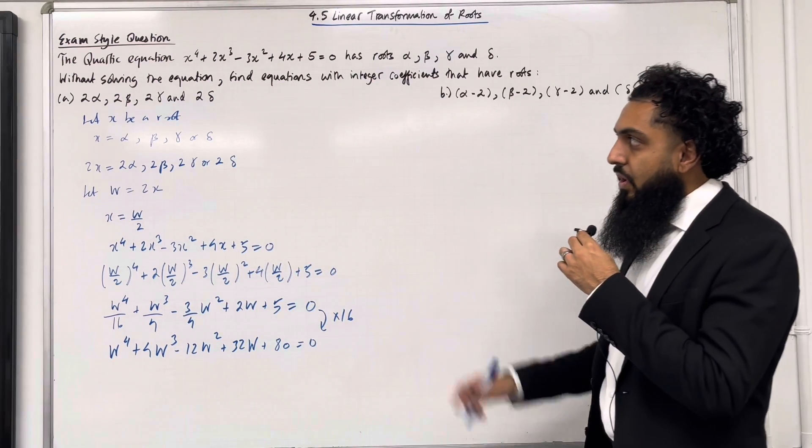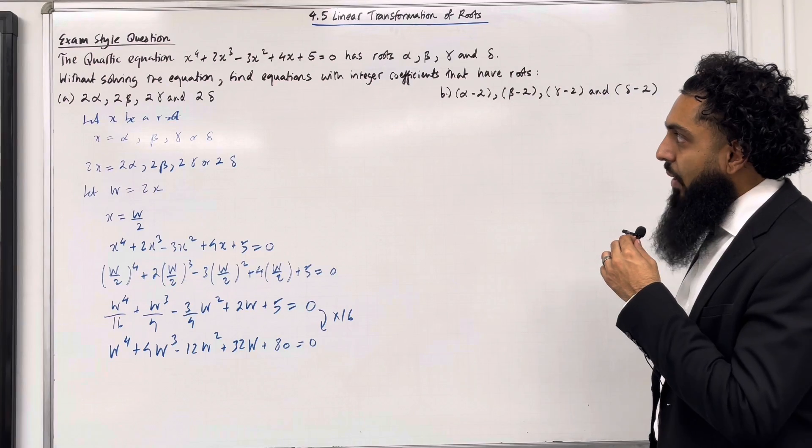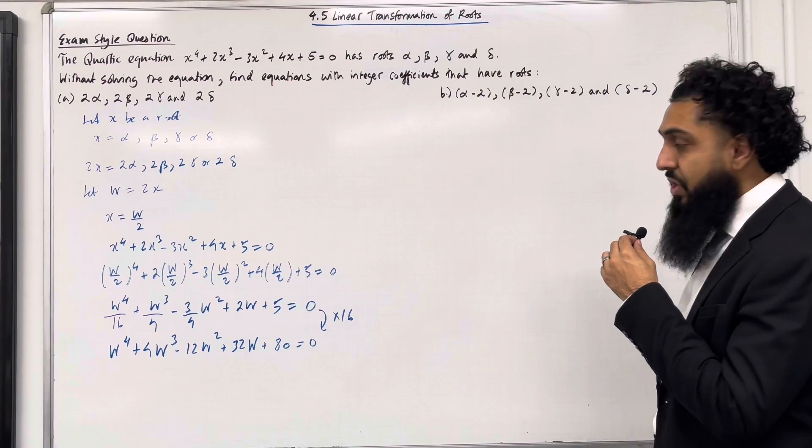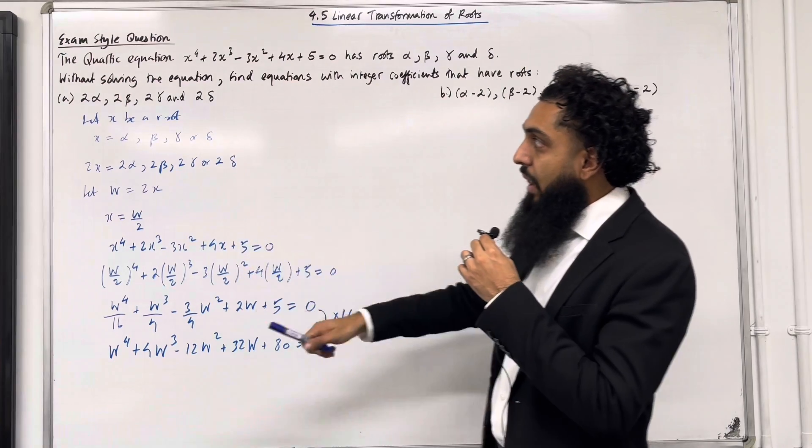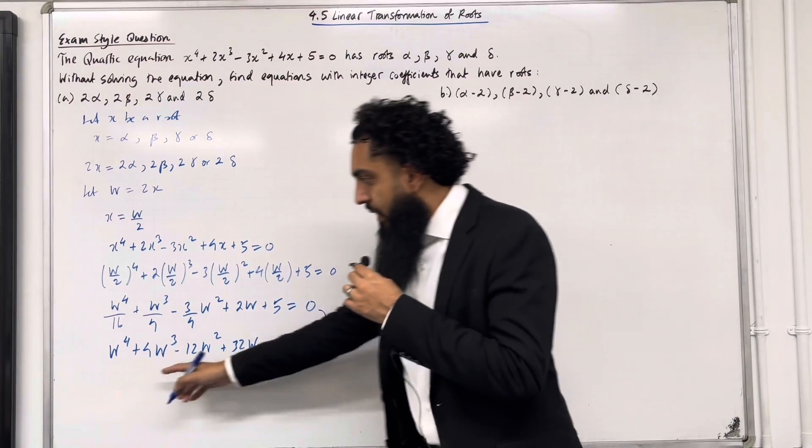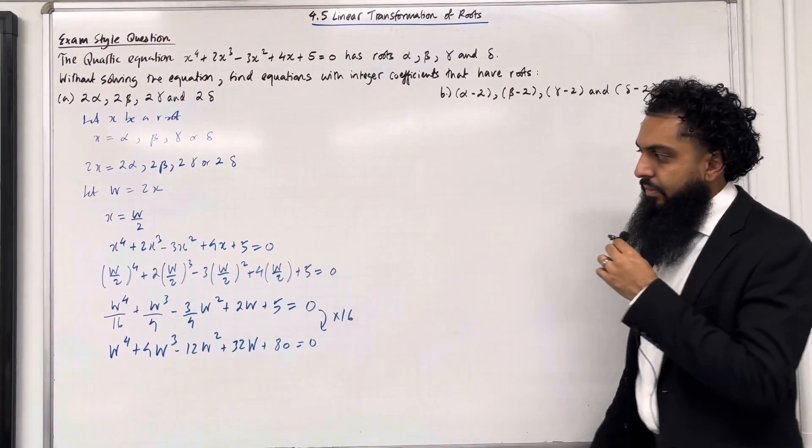So that there is the solution to part A. We have found the equation with integer coefficients that has roots 2α, 2β, 2γ and 2δ. This is the required equation.